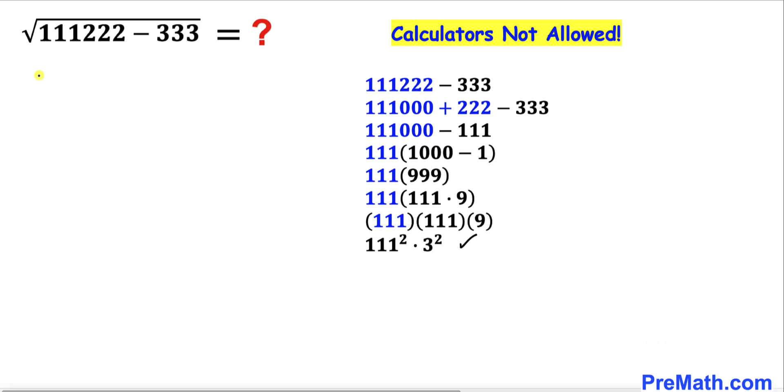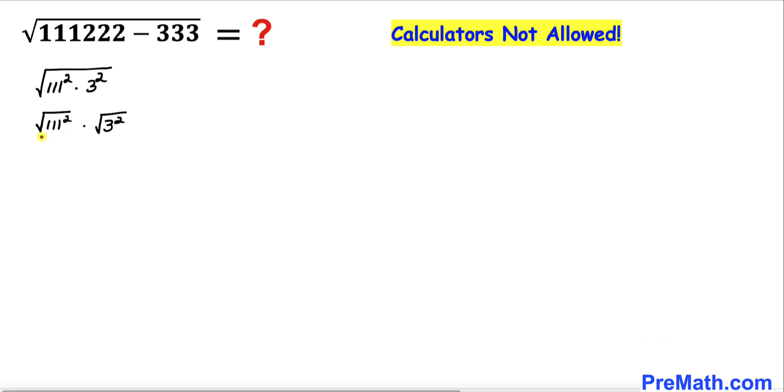In this next step they could be broken down into two radicals. Now we can see the square and square root cancel out. Likewise, this square and square root cancel as well.